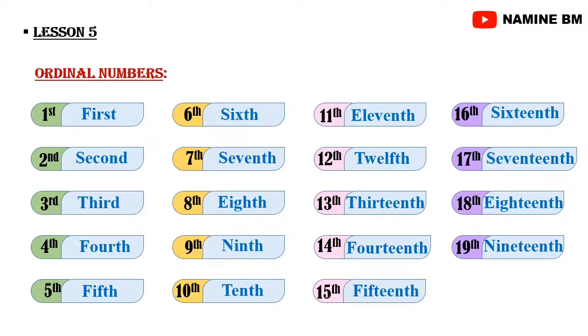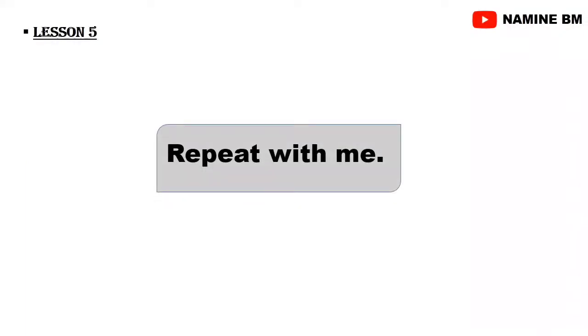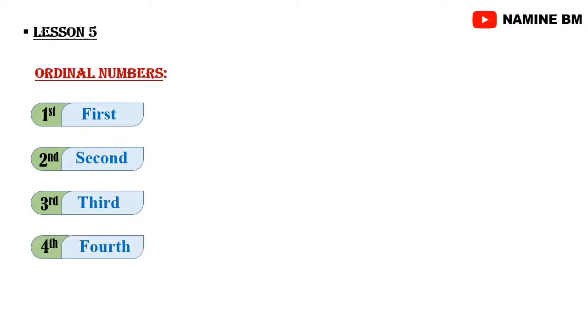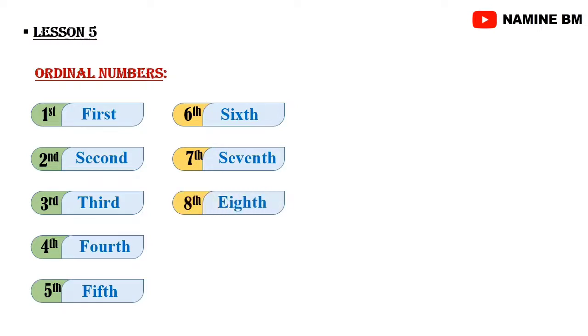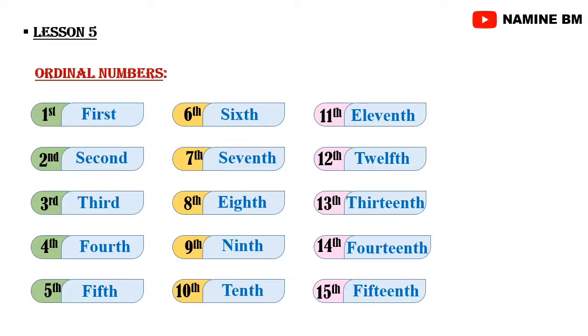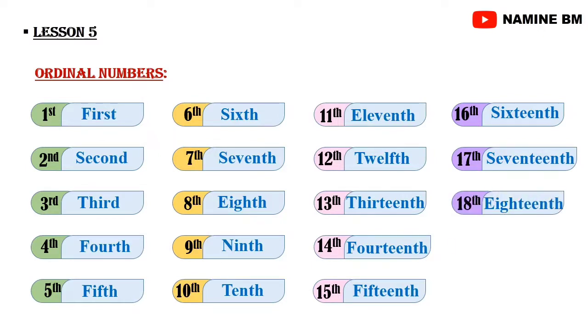Now repeat with me. First, first. Second, second. Third, third. Fourth, fourth. Fifth, fifth. Sixth, sixth. Seventh, seventh. Eighth, eighth. Ninth, ninth. Tenth, tenth. Eleventh, eleventh. Twelfth, twelfth. Thirteenth, thirteenth. Fourteenth, fourteenth. Fifteenth, fifteenth. Sixteenth, sixteenth. Seventeenth, seventeenth. Eighteenth, eighteenth. Nineteenth, nineteenth. Twentieth, twentieth. Very good.